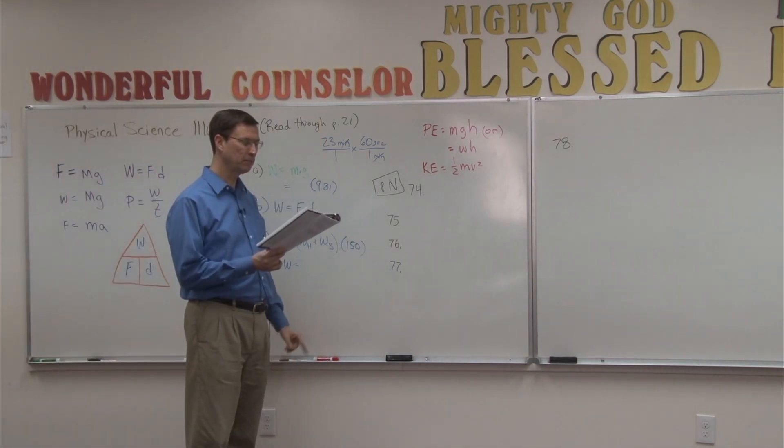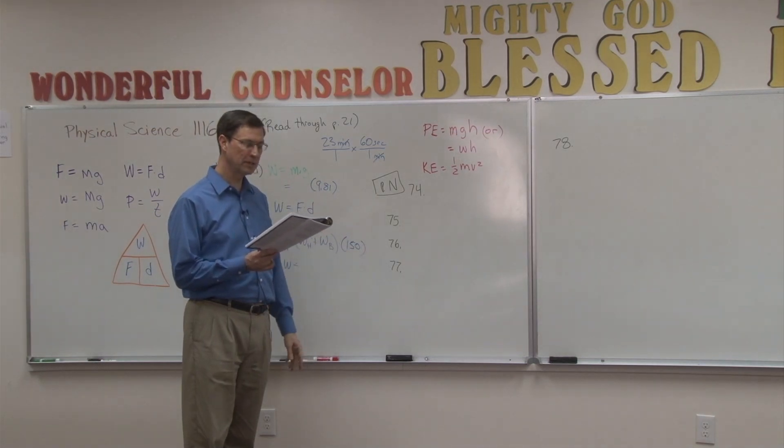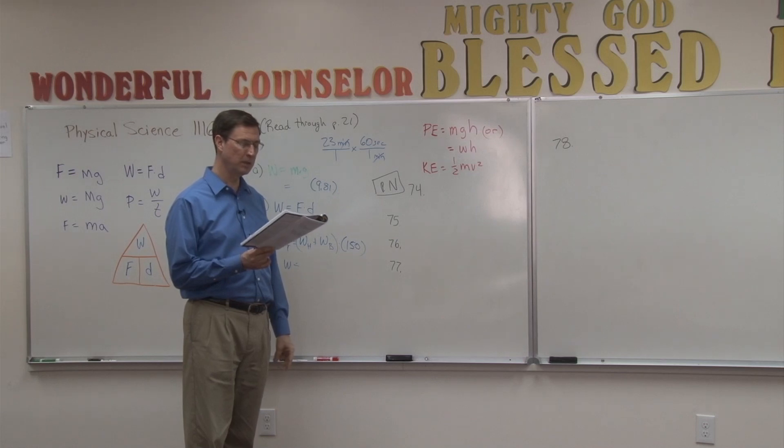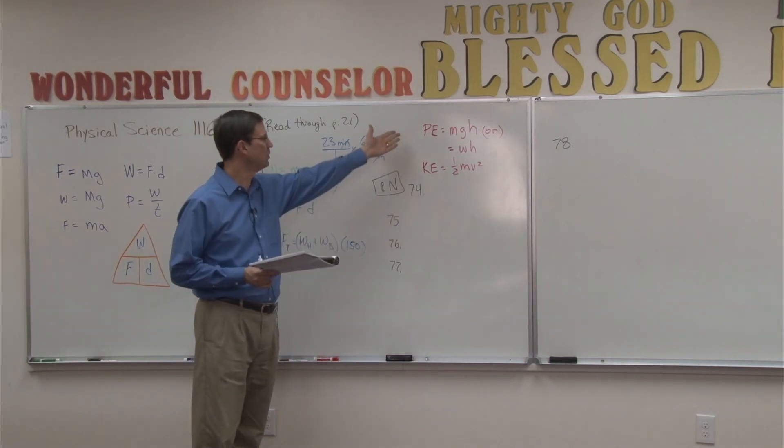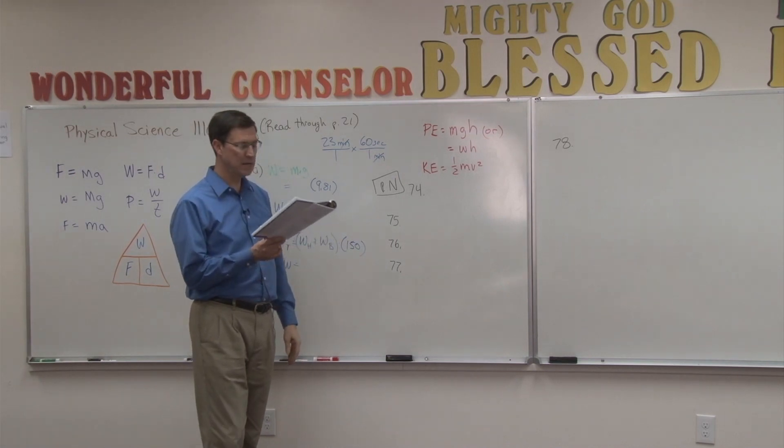76 we just did. 77. A person who weighs 620 Newtons climbs 6 meters up a ladder. So again, we're just using potential energy. Easy. Let's think about 78 now. That's one where it says think. And you do have to think on this one a little bit.